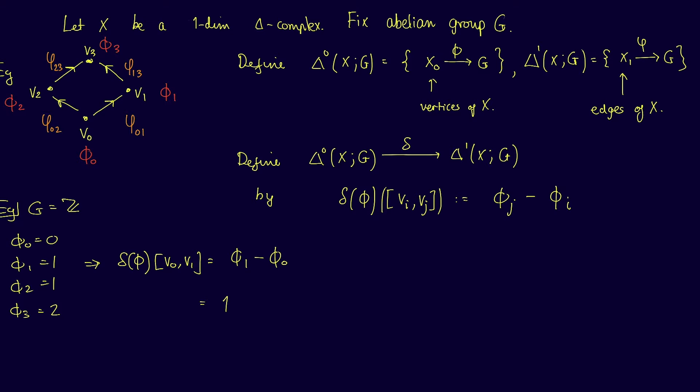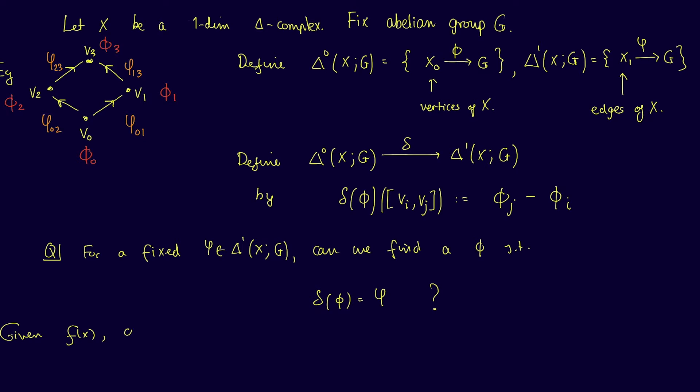So now we have a group structure on the vertices and edges of X, as well as a map between these two groups. An obvious question would be: Does the equation δφ = ψ always have a solution for a given ψ? In other words, given a fixed ψ in Δ¹(X;G), does there exist a φ such that δ of φ is equal to ψ? This is analogous in some way to calculus: Given a function f(x), can we find a function F(x) such that the derivative of F is equal to f?